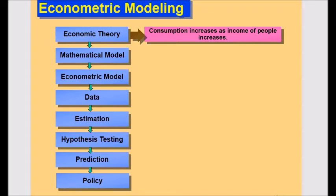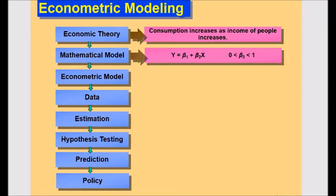Now, you need to specify the mathematical model for this theory. Here, it's mentioned that Y is equal to beta 1 plus beta 2 X, whereas beta 2 is greater than 0, and beta 2 is less than 1.